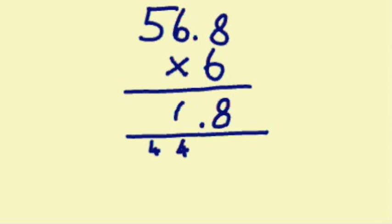putting in as such. And finally we do 6 by 5, which is 30, add on the 4 from the previous sum, making 34. And a final answer of 340.8. Just as the one before, we have one figure after the decimal point in the answer and the question.